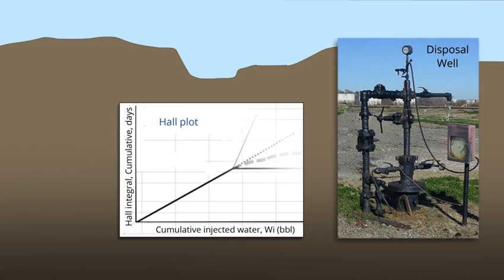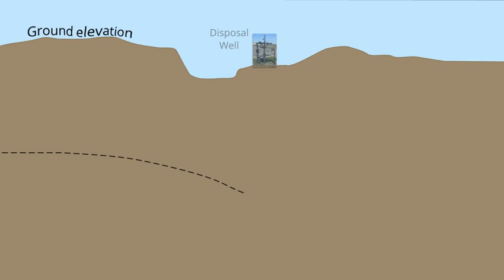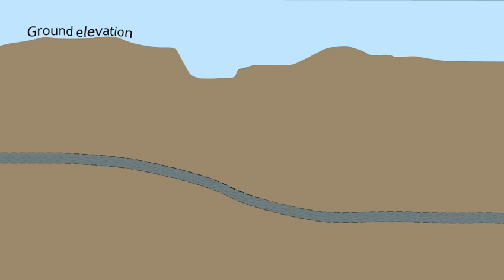Let's take a look at a cartoon view of the operational analysis technique, the Hall Plot. We start with a profile of the ground elevation, then add a couple of lines representing the reservoir or formation to be used for injection.